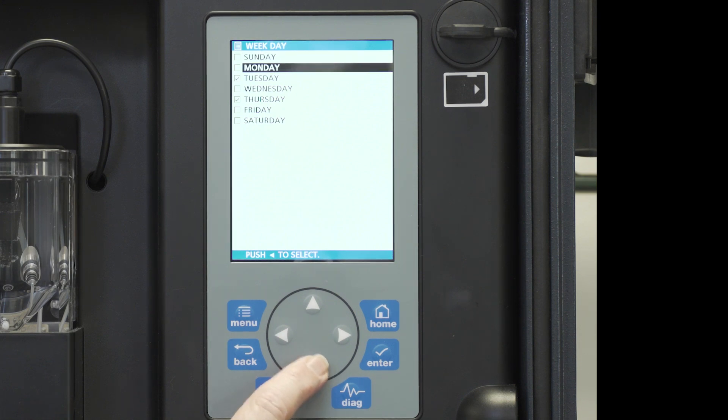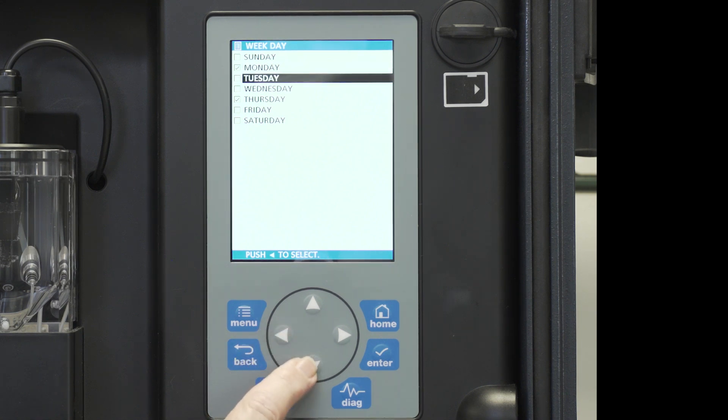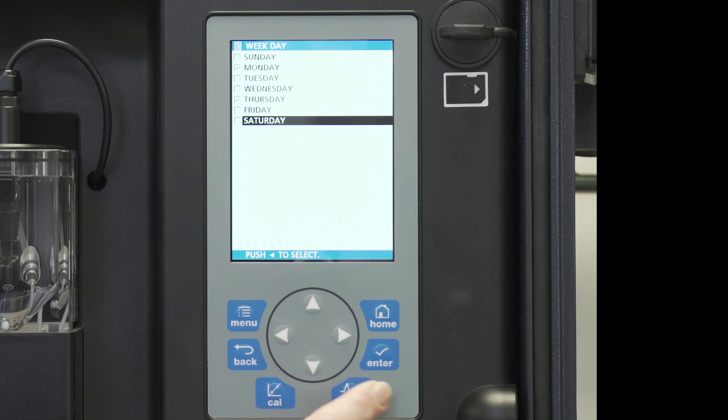So I scroll down to Monday, hit the right arrow key. I want to deselect Tuesday. Wednesday has already been deselected. Thursday is what we select. And we press enter.